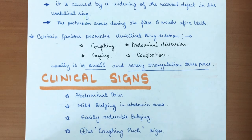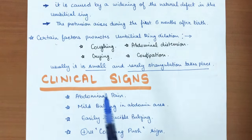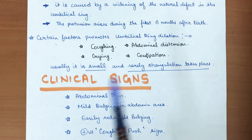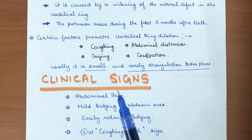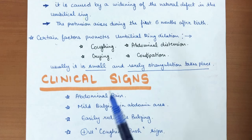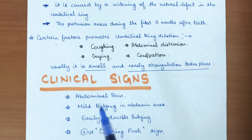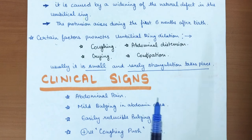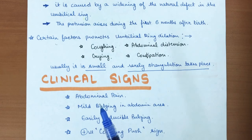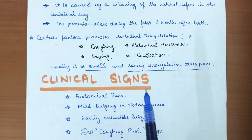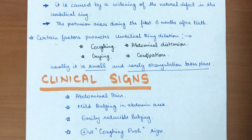The clinical signs of infantile umbilical hernia include abdominal pain — in an infant this manifests as continuous crying for many hours. There will also be mild bulging in the abdominal area, which is easily reducible because the abdominal wall is not yet rigid. A positive cough impulse sign is also present.